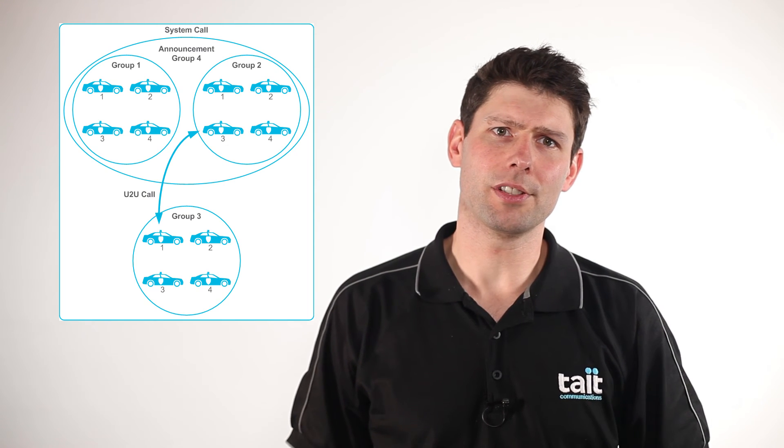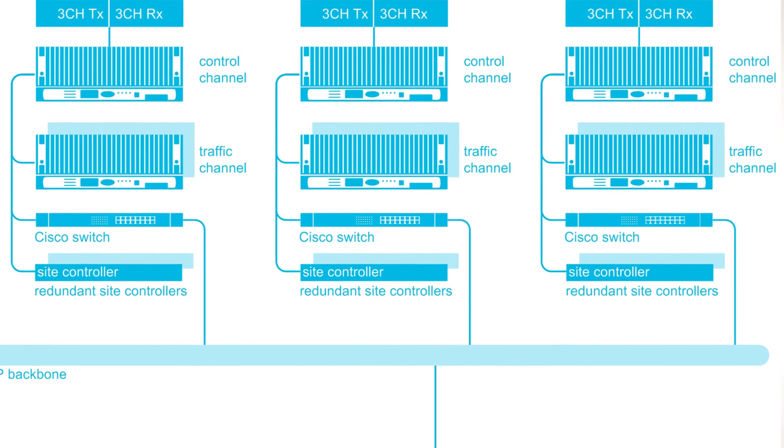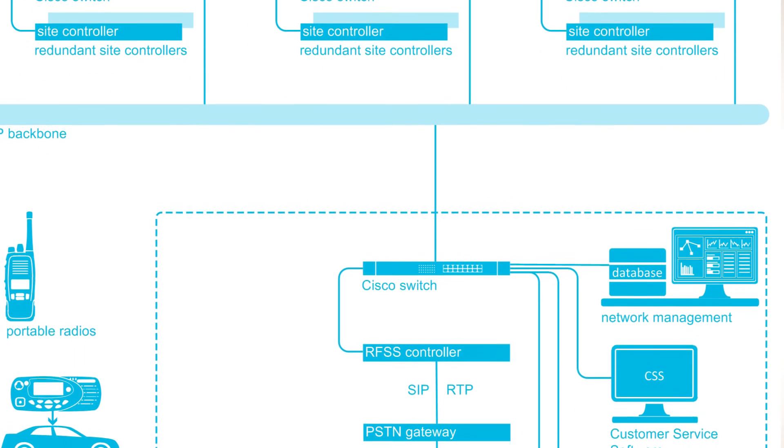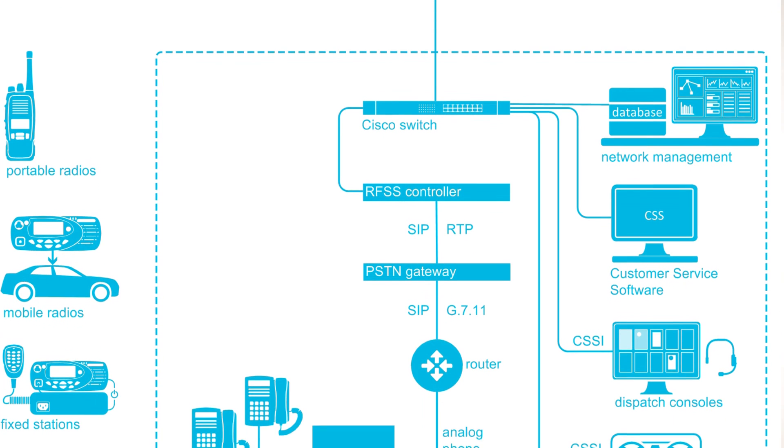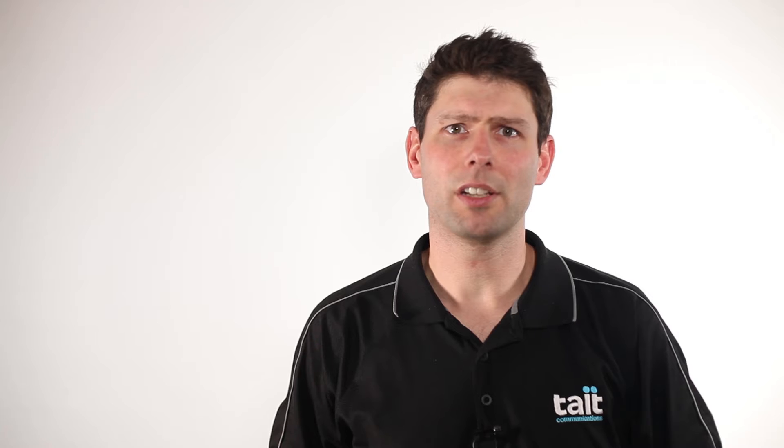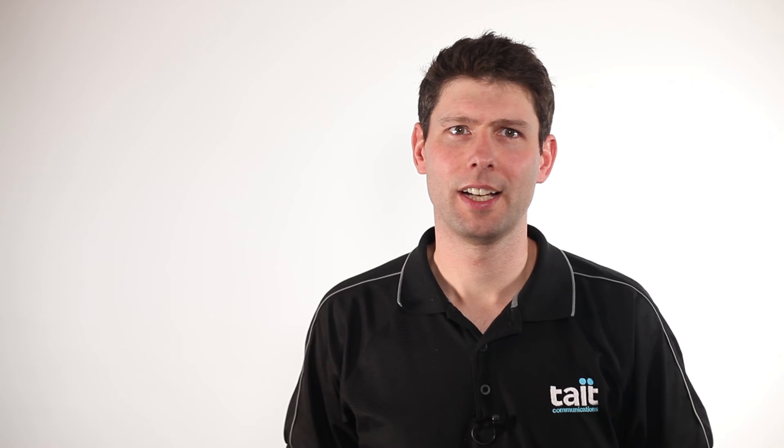Where a large number of different teams operate in the same area, trunking can be used to share the same pool of available channels. A console system can connect to the trunking system using the console subsystem interface, or CSSI. Capacity can be increased by adding additional channels to the trunk system, and coverage can be increased by adding sites. Large statewide networks can be created, and many agencies can share the same network and therefore the costs. An individual agency may purchase only the subscriber units — the mobiles and portables — and then pay a fee to access the radio network.